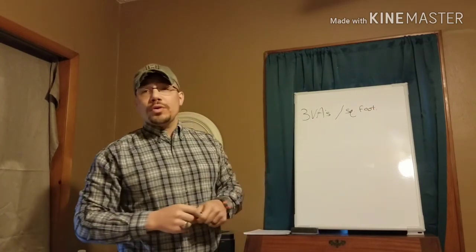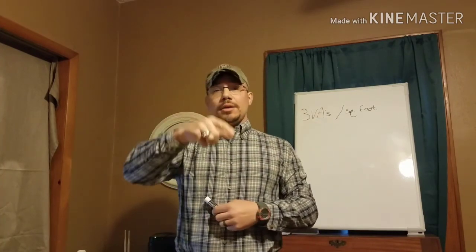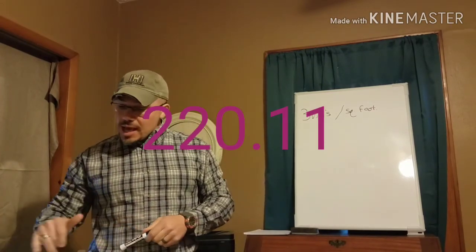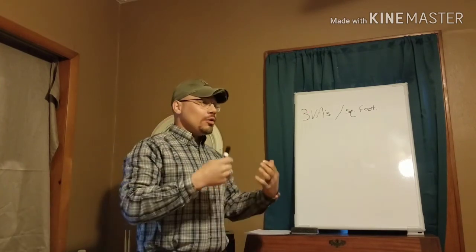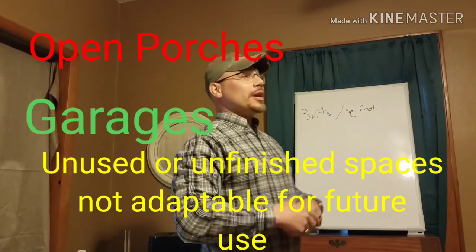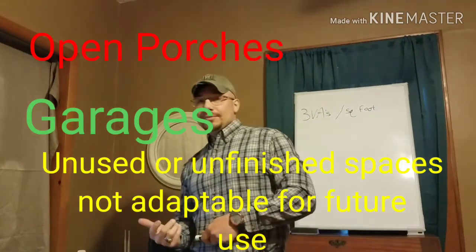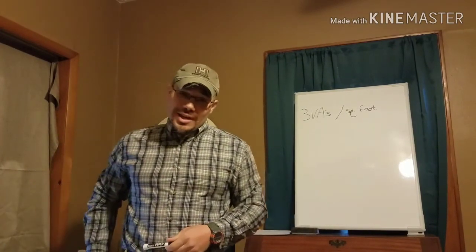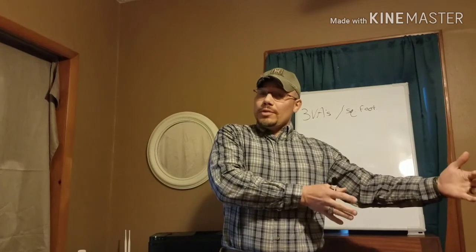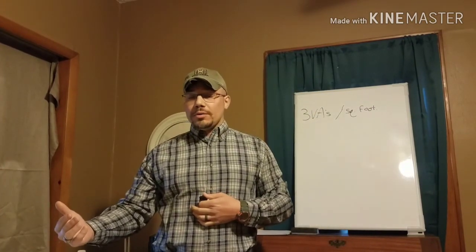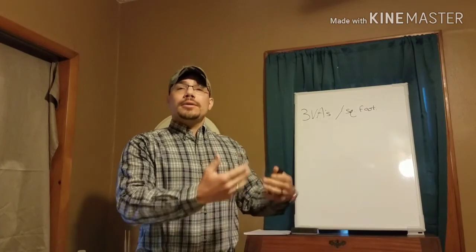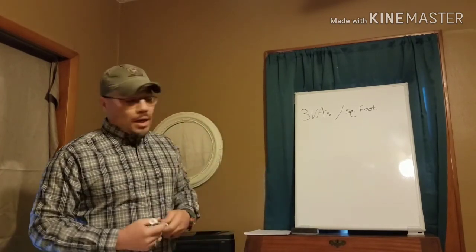3 VAs per square foot. That square footage is the complete outside dimensions of the house with some exceptions. If we look at Article 220.11, it says that the things that are not included are open porches, garages, and unused or unfinished spaces that cannot be put into habitable rooms later. The reason we have to think that way is because we don't want them to adapt it later if it's possible to adapt, and then our service calculation would have been wrong. If it's something that can't be adapted later, a portion of the house that cannot be adapted for a livable space later, then we don't have to count that.